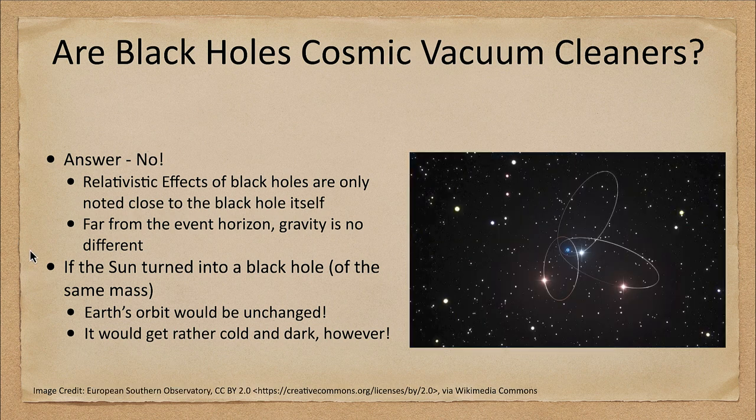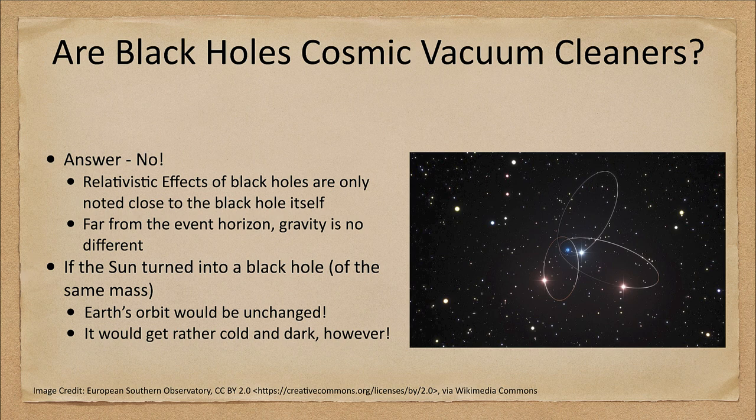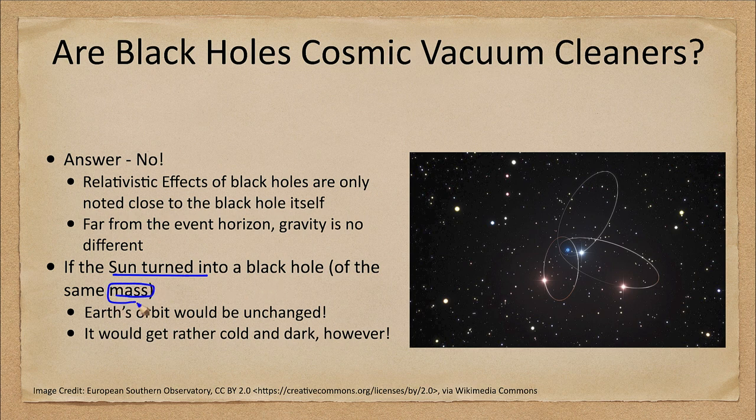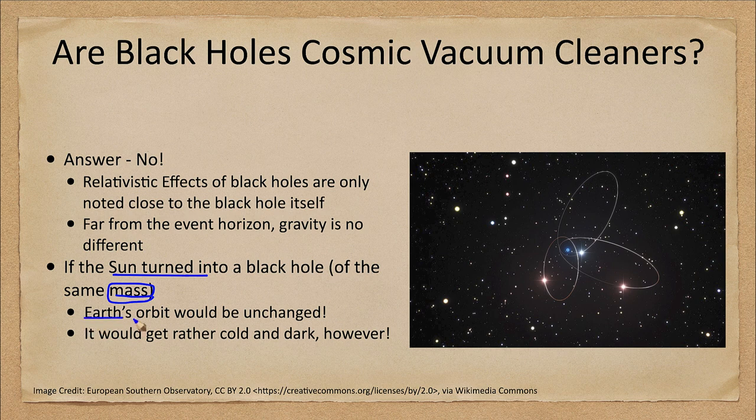Black holes can do some unusual things, but they are not the cosmic vacuum cleaners that we think about. If the Sun were to turn into a black hole, leaving its mass exactly the same—just compressing it down much smaller—Earth's orbit would not change. It would get rather cold and dark because we've lost our source of light and heat in the solar system.